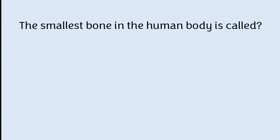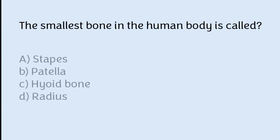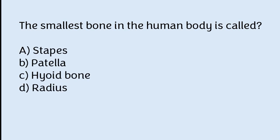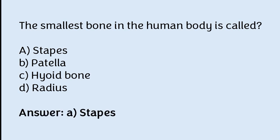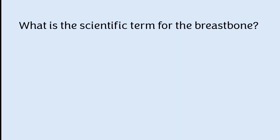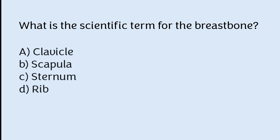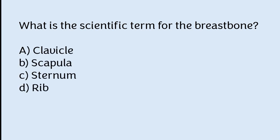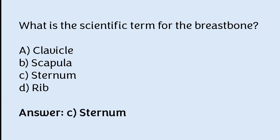The smallest bone in the human body is called: stapes, patella, hyoid bone, or radius. The correct answer is option A — the smallest bone in the human body is called stapes. What is the scientific term for the breast bone? Clavicle, scapula, sternum, or rib. The correct answer is option C — sternum is the scientific term for the breast bone.